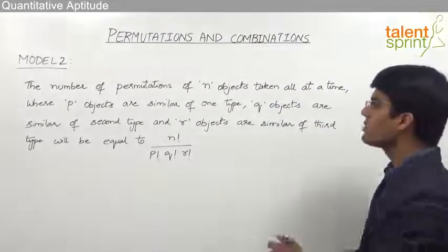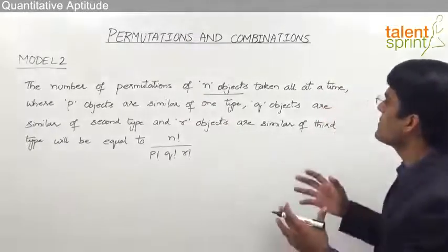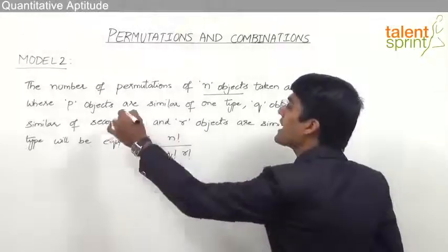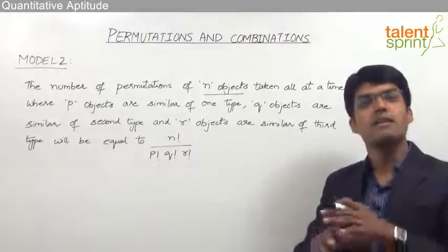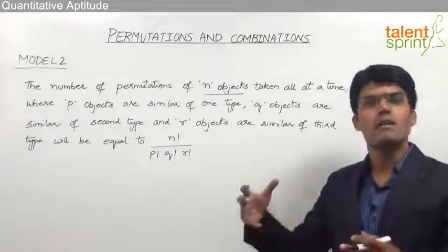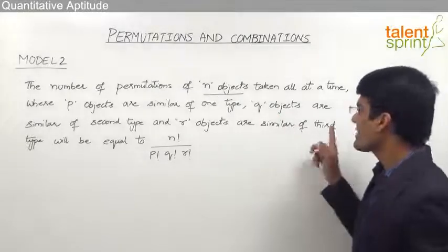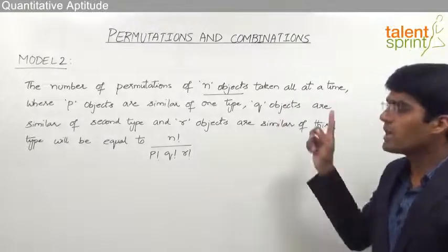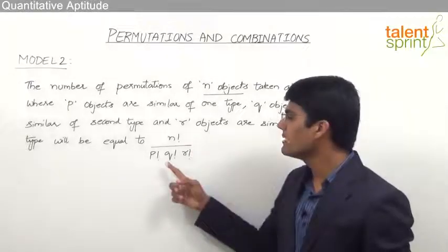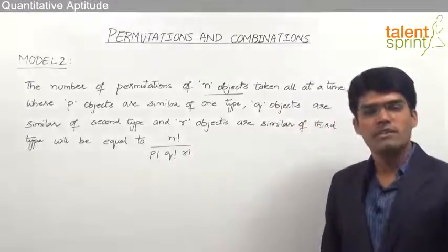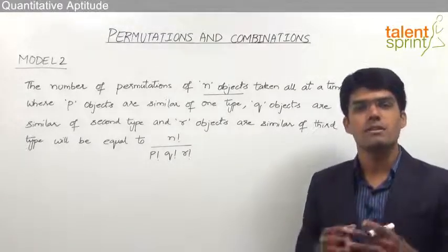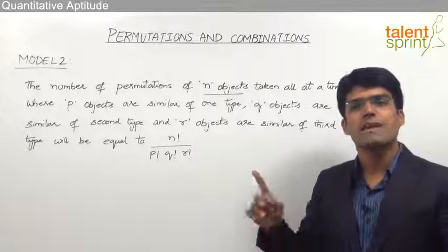So as you can see, total there are n objects and the number of permutations of all these n objects taken at a time, where p objects are similar of one type — meaning there are p objects which are similar to each other — likewise q objects are similar to each other of a second category and r objects are similar of a third category. The total number of permutations in such a case will be n factorial by p factorial into q factorial into r factorial. So whenever we have objects which are identical or similar to each other, we need to take those number of objects' factorial in the denominator.